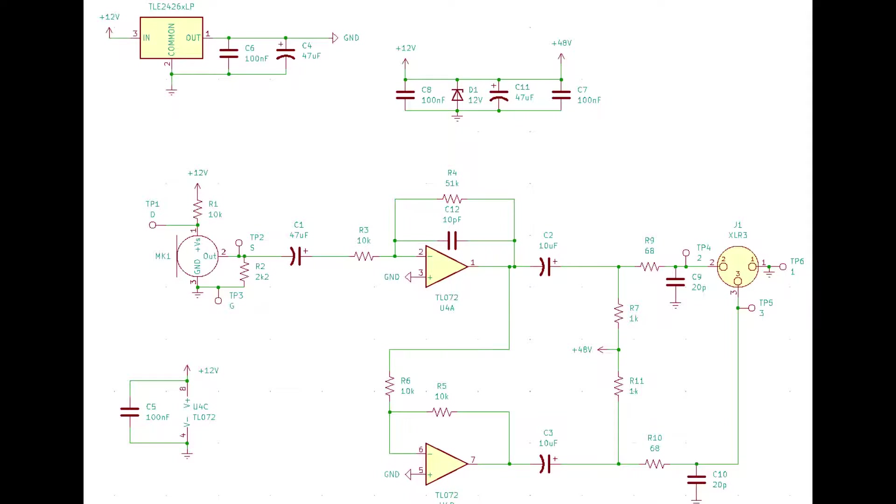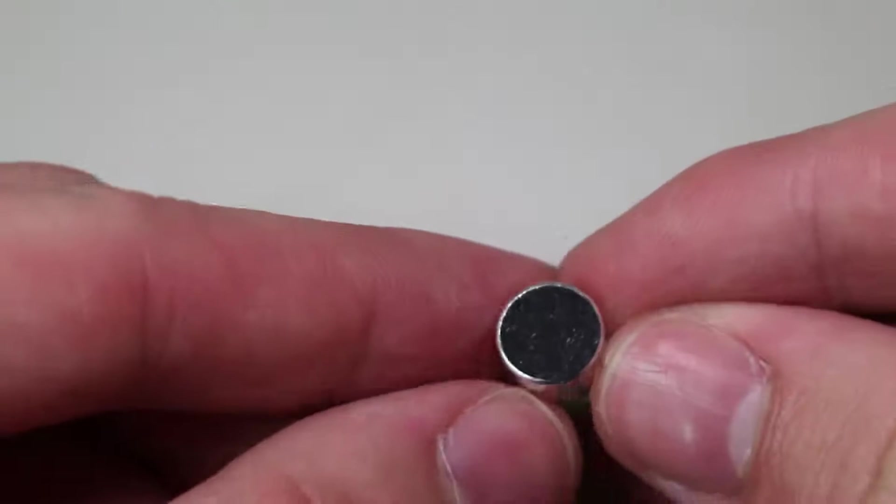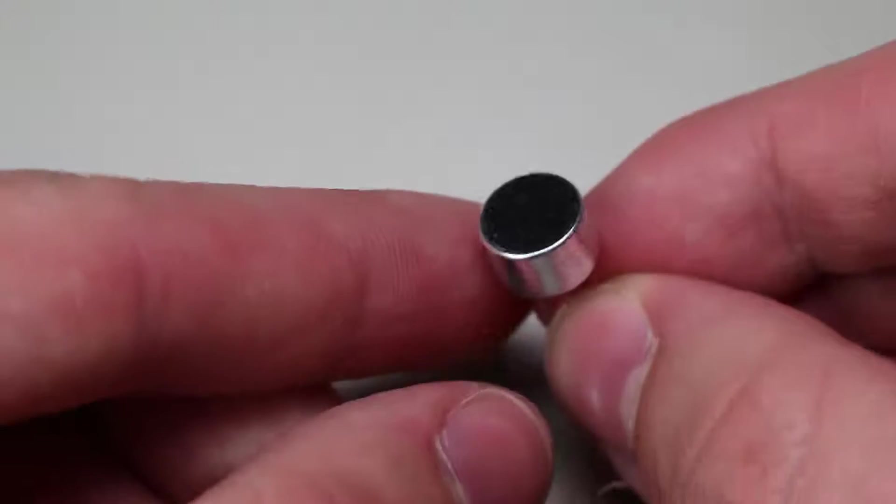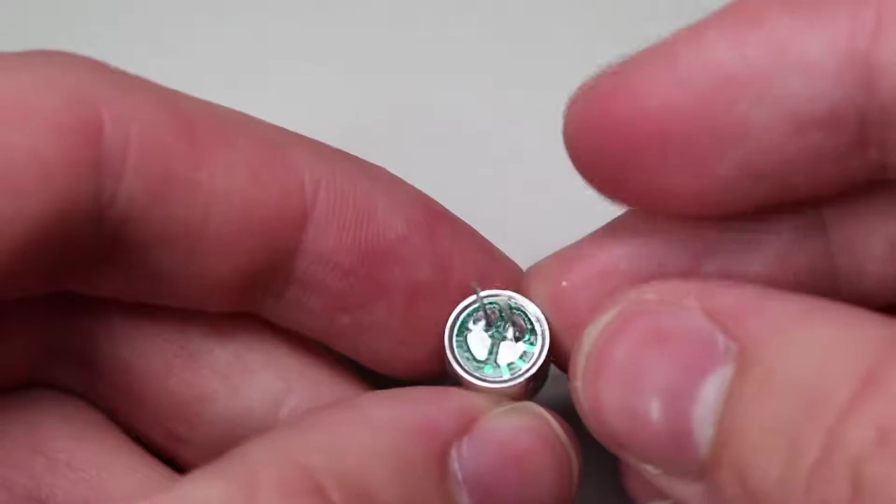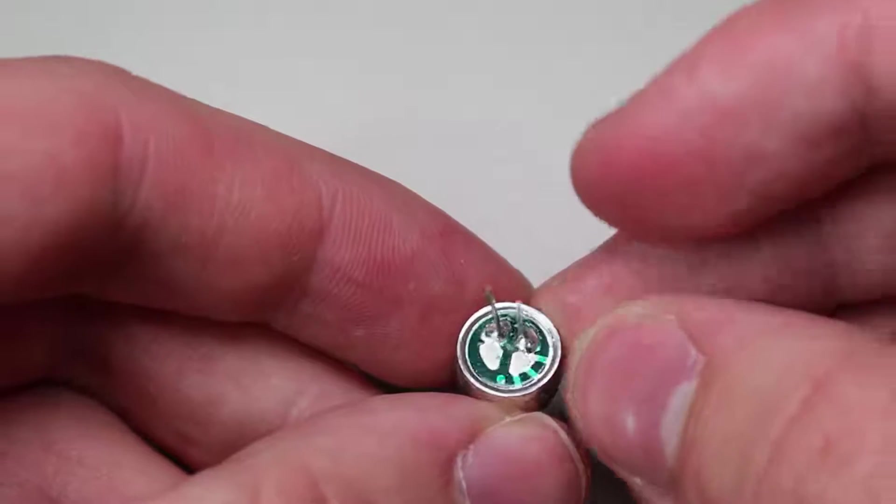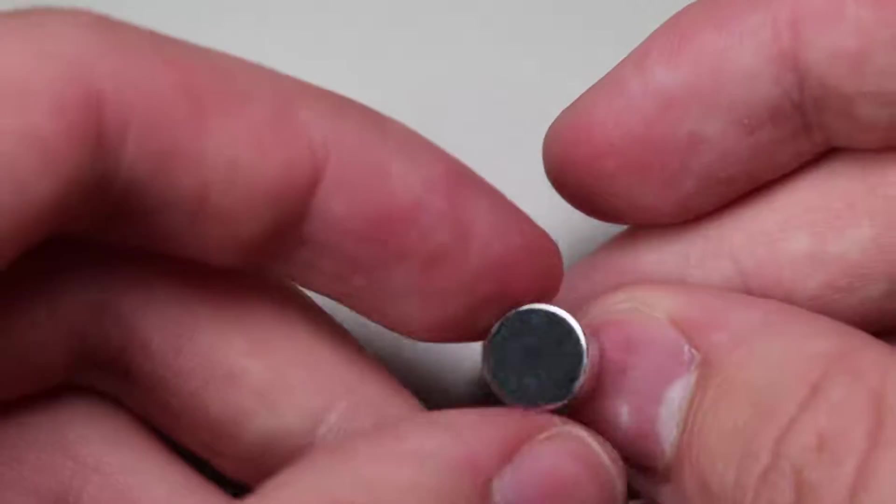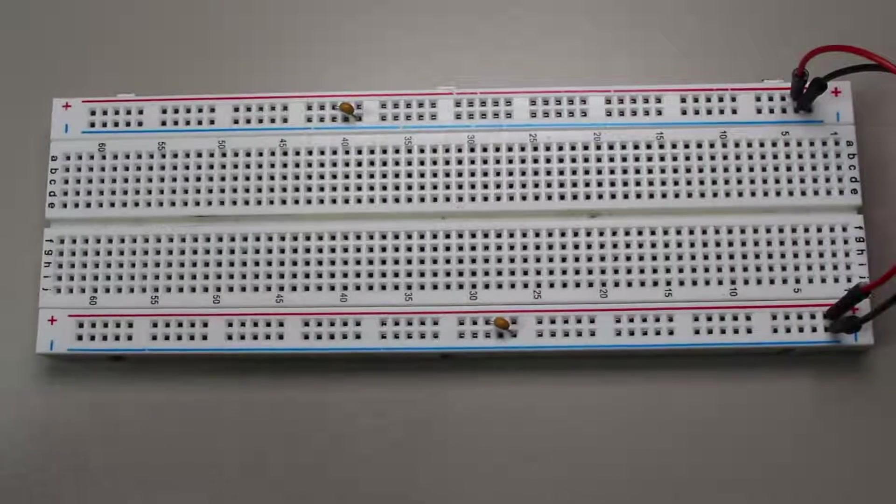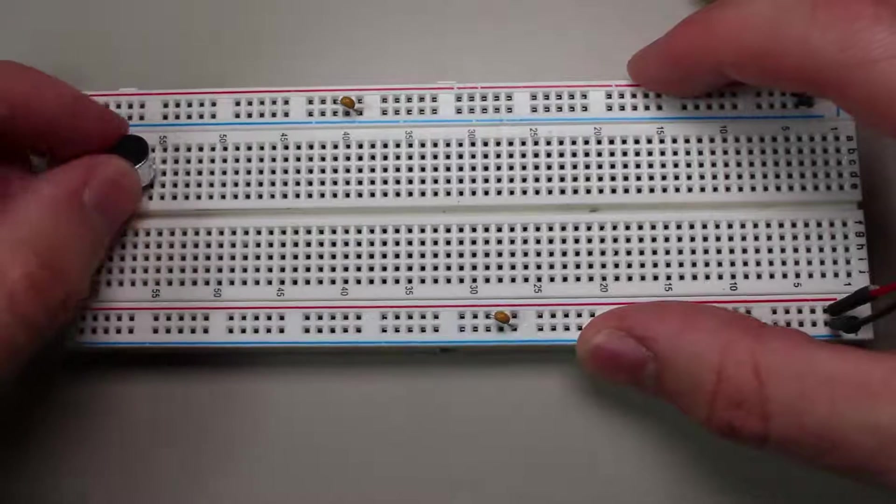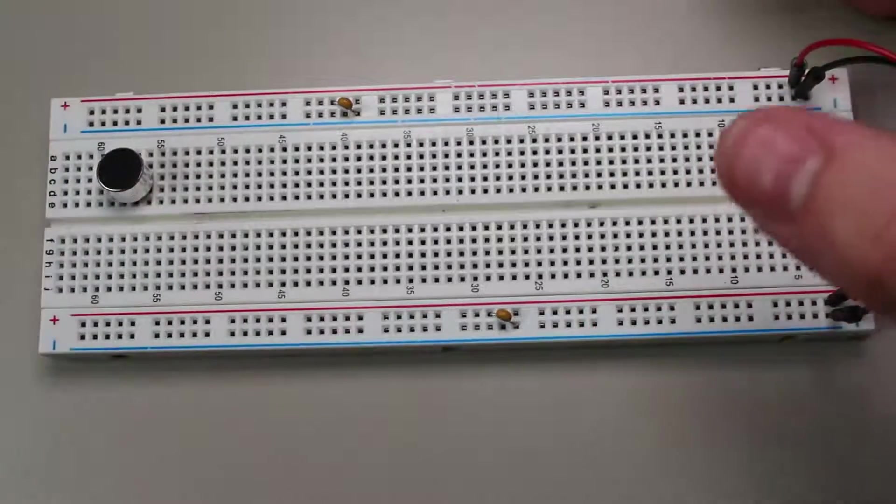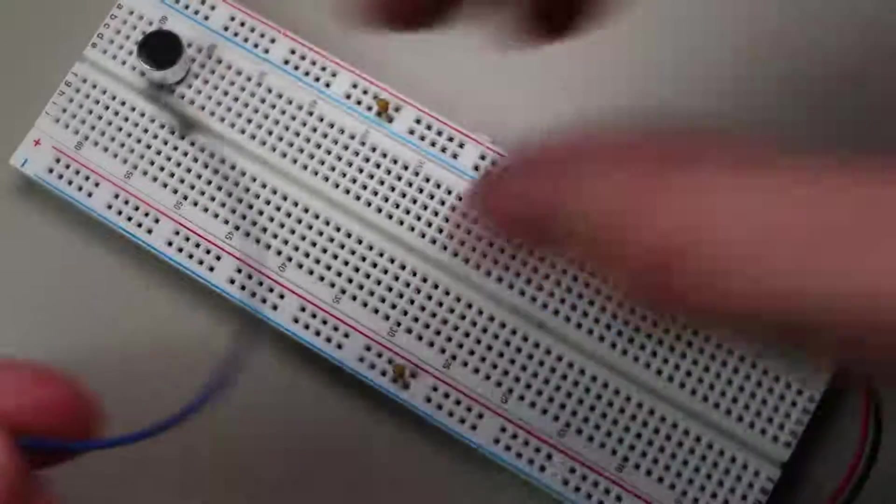The final schematic for this project is in the description. Let's start with perhaps the most basic form of a microphone that other YouTube videos will show you. Here is this tiny electret capsule. This electret microphone is a type of condenser microphone, as opposed to dynamic microphones. Electrets are different from other condenser types because they are permanently polarized internally. Well, what does that even mean?